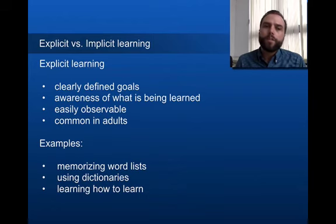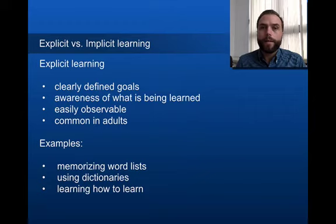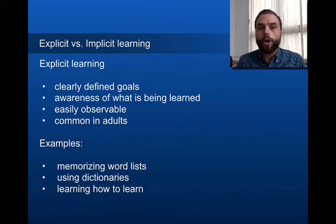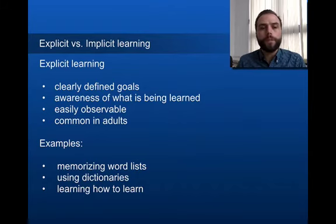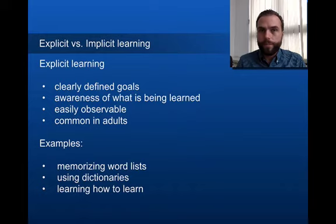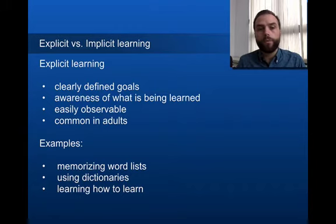Let's move on to explicit versus implicit learning. Explicit learning means there are clearly defined goals and awareness of what is being learned. It's easily observable and common in adults. Examples include memorizing word lists, using dictionaries, and thinking about and planning the learning process — these are all explicit learning.